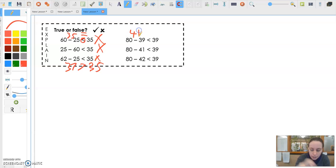80 minus 39 is 41. Again, 41 is larger than 39. So it should be like that. That's the wrong way around. So that's false. It's actually larger than. It's more than, isn't it? 80 minus 41 is 39. That's the same as 39. So it should be an equal sign, okay? So that's false. They're the same. They're balanced.